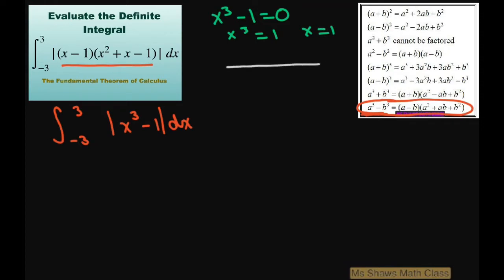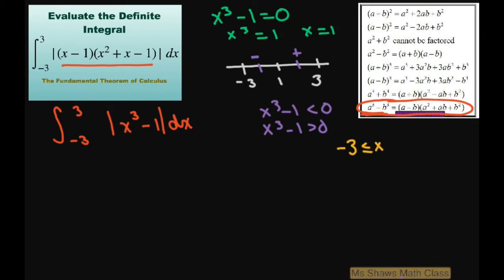I'll do just a little sign diagram from negative three to one to three. If I substitute in zero between negative three and one, x cubed minus one is going to be negative. If I substitute in two, I'll get positive. So when negative three is less than or equal to x is less than or equal to one, x cubed minus one is negative, meaning the absolute value of x cubed minus one equals negative x cubed plus one, because you negate it.